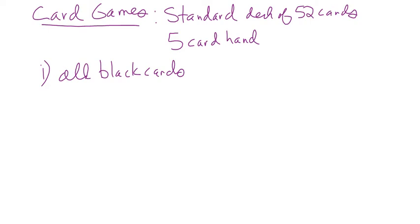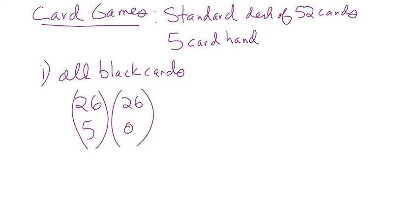There are 26 black cards — half of 52. How many do we need? Five. There are 26 red cards, and we need none of them. So it's 26 choose 5, which equals 65,780.